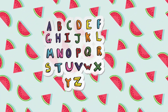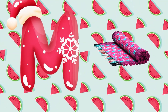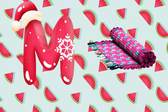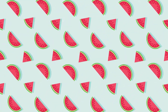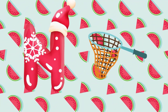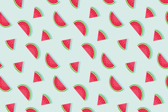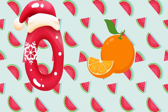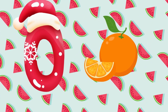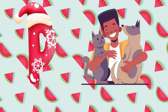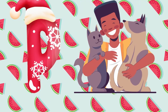M is for mat, m-m-mat. N is for net, n-n-net. O is for orange, o-o-orange. P is for pet, p-p-pet.